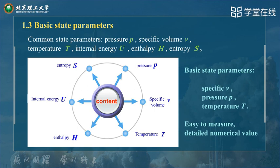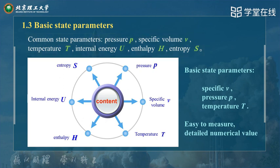Another three state parameters are internal energy, enthalpy H, and entropy S. So in thermodynamics, we have six state parameters. However, only V, P, T are basic state parameters, because they are easy to be measured.